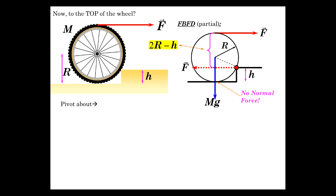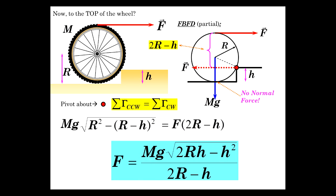So that'll give us a lot more torque with a lot less force. Same as before: Mg times the moment arm, which is square root of R squared minus quantity R minus h squared, equals the applied force now times 2R minus h. And there is our coveted result. The only difference is in the denominator we have 2R minus h, which obviously makes the force required a lot less.